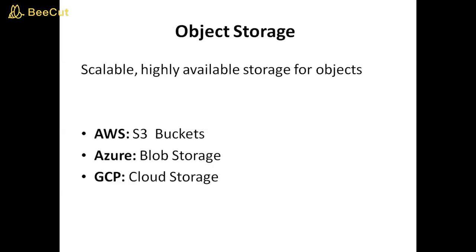Object storage: scalable, highly available storage for objects. AWS: S3 buckets. Azure: blob storage. GCP: cloud storage.